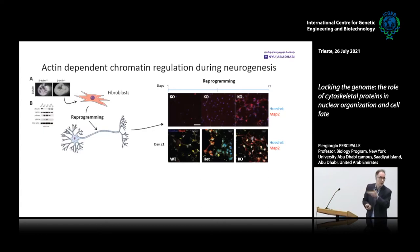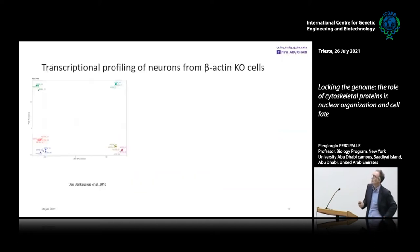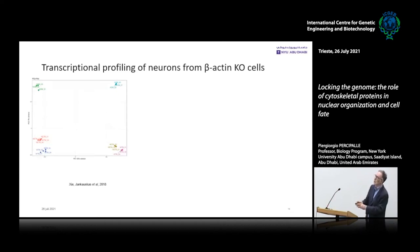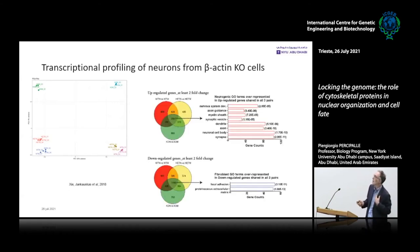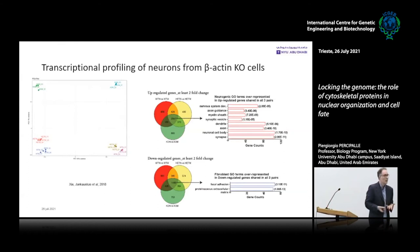We wanted to establish whether there is a loss of neuronal identity — looking at cell fate. RNA-seq principal component analysis shows that heterozygous and wild-type cluster together, but are totally different from knockouts, similarly in the induced neuronal condition. When looking at commonly upregulated genes, we only see neurogenic GO-terms, whereas downregulated genes are mostly related to fibroblasts — suggesting these embryonic fibroblasts were really turned into neurons.